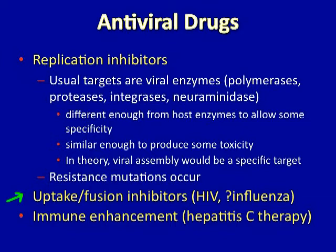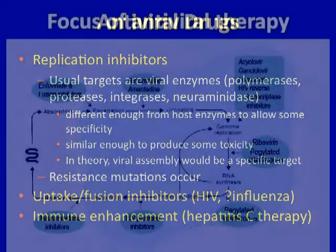Another class of antiviral drugs are fusion or uptake inhibitors. The first class of fusion and uptake inhibitors has been developed for treating HIV infection, basically preventing the virus from being taken into the cell initially. Because influenza virus also has a fusion protein on its surface, there is intense interest in producing a drug that will inhibit the fusion of influenza virus and prevent infection. On a different note, some antiviral drugs actually enhance the immune system — this is characteristic of some hepatitis C therapy, which depends on exogenously administered interferons to enhance the effect of more classic antiviral drugs.